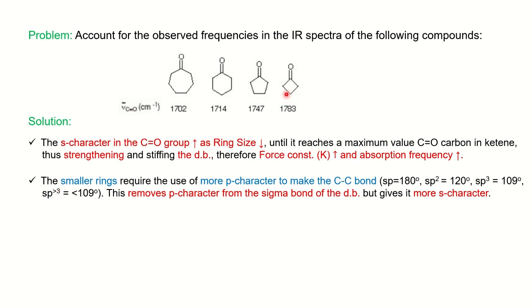As the size decreases, the p-character increases for making the C-C sigma bond of the ring, which removes the p-character from the sigma bond of the double bond, and thus it increases the s-character of the double bond. As we've seen, the s-character of the double bond increases as the ring size decreases.